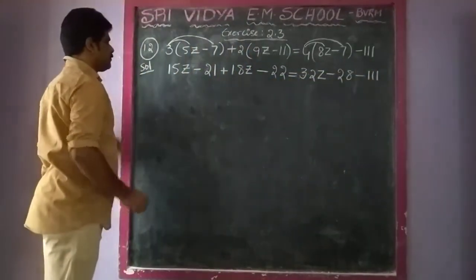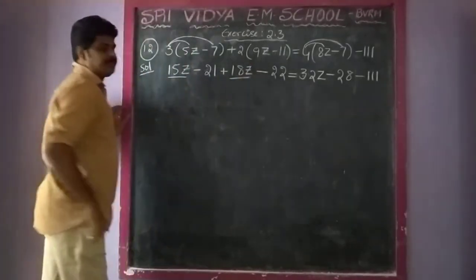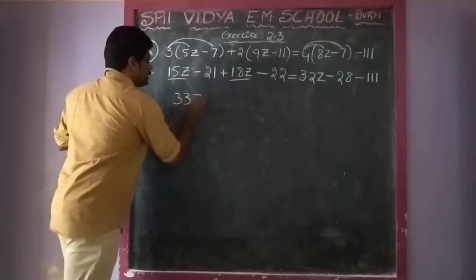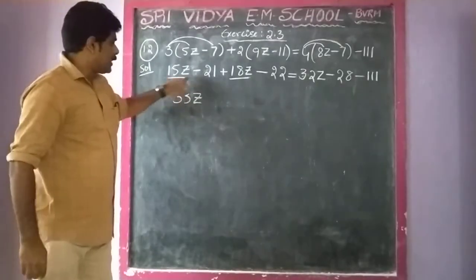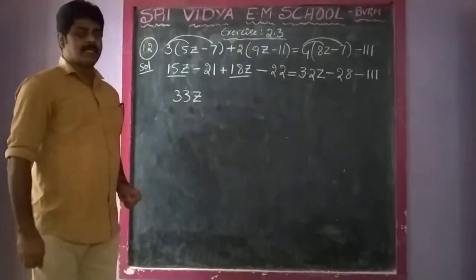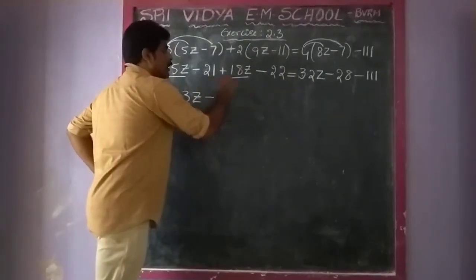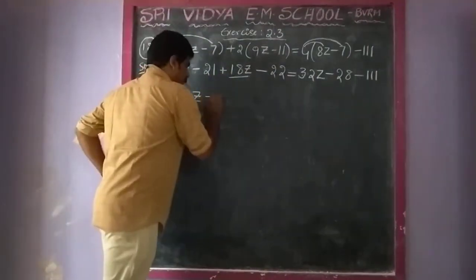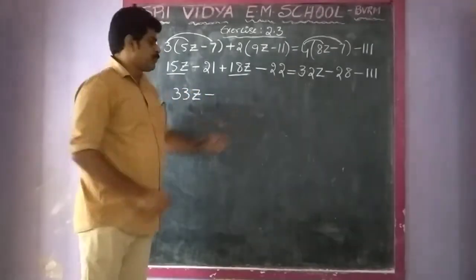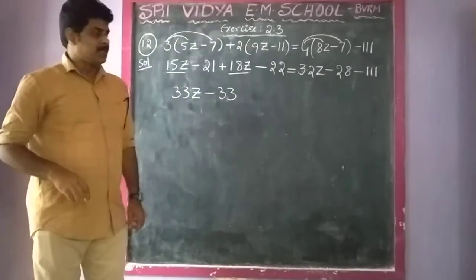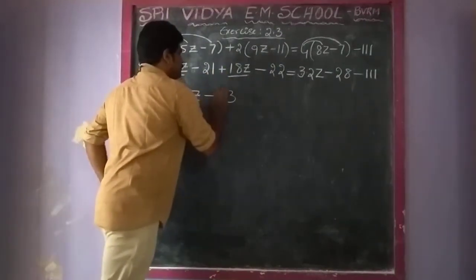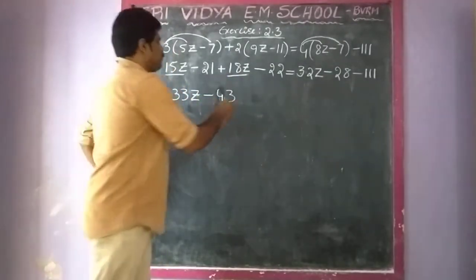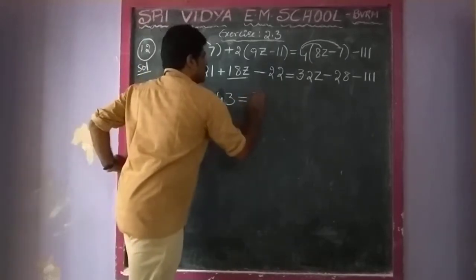So simplify the like terms: 15z and 18z gives 33z. And minus 21 minus 22 — both are negative — gives minus 43. This is equal to 32z.